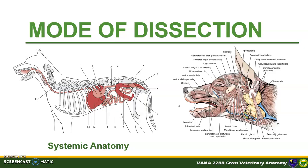On the other hand, regional anatomy is directly concerned with the form and relationships of all the organs present in a particular part or region of the body. An example in this slide is the anatomy of the head. Note that it pays less attention to function. However, this approach has compensating importance from its immediate application to clinical work. In general, this course follows systemic dissection as each module is divided per system.